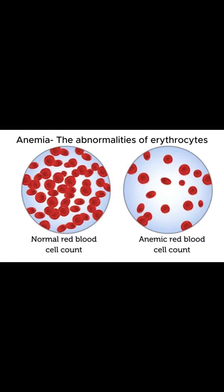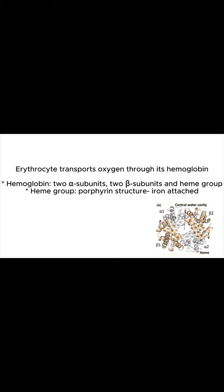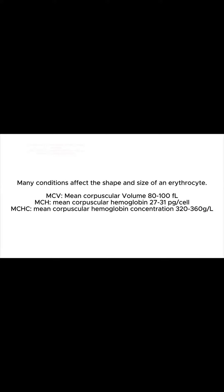Life under microscope: anemia — the abnormalities of erythrocytes. To understand the abnormality of erythrocytes, we first need to understand the function of the cell. An erythrocyte transports oxygen through its hemoglobin molecule. The hemoglobin consists of two alpha and two beta subunits and a heme group. The heme group has a porphyrin structure; iron is attached to porphyrin and it binds to gases such as oxygen.